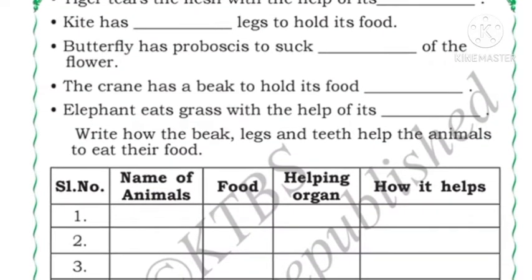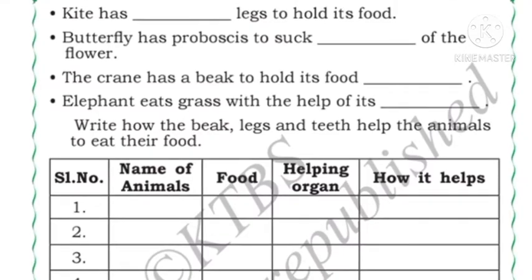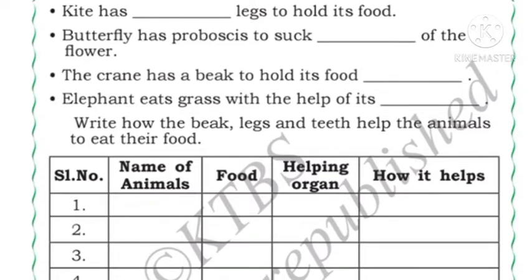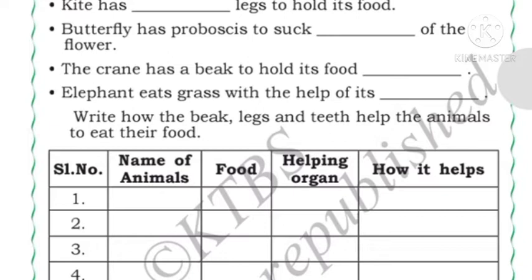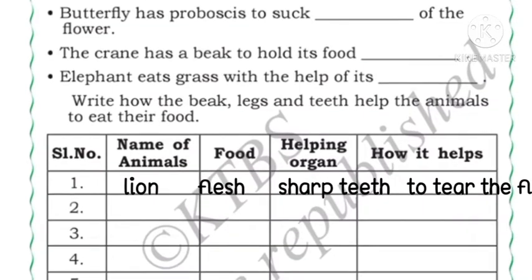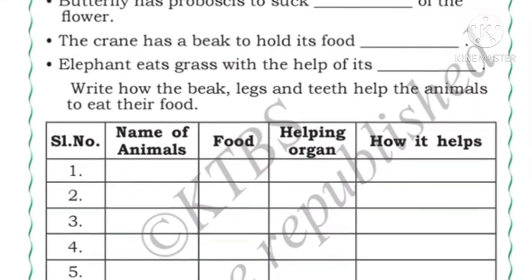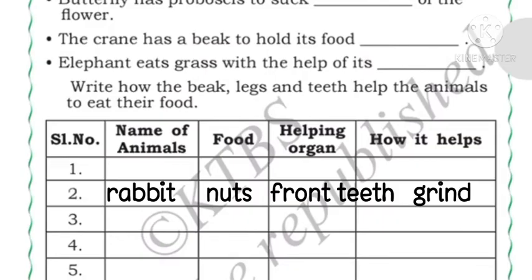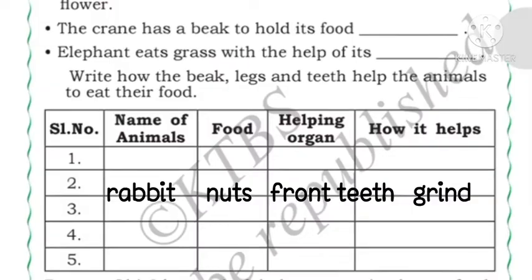Now we have to write how the beak, leg, and teeth help animals to eat their food. I will write some other animals. Lion — food: flesh; helping organ: sharp teeth; how it helps: to tear the flesh. Rabbit — food: nuts and vegetables; helping organ: front teeth; how it helps: to grind the food.